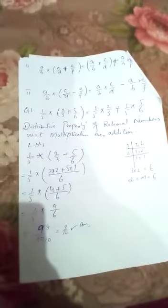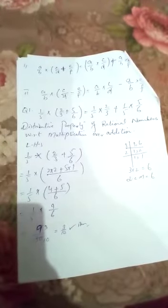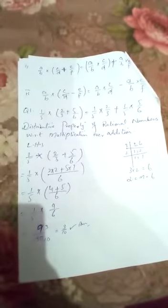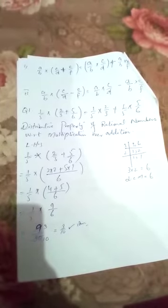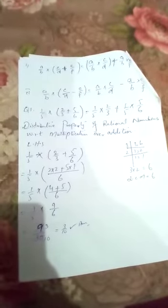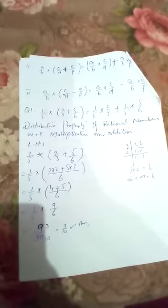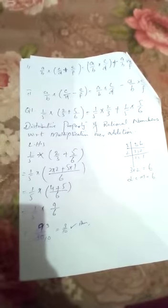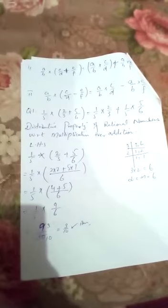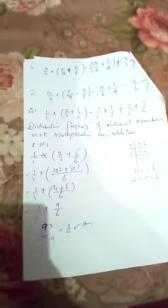Now we have a question. For example, 1 by 5 multiply 2 by 3 plus 5 by 6 is equal to 1 by 5 multiply 2 by 3 plus 1 by 5 multiply 5 by 6. Now dear students, first we will write the name of property, that is distributive property of rational numbers with respect to multiplication over addition.